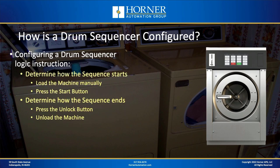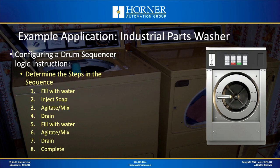Let's look at an example industrial washer — greatly simplified, but illustrative of how to use a drum sequencer. We're going to start it with a start button and end it after the wash sequence is complete by pressing a button that unlocks the washer so we can open the door and unload it. The steps are: fill with water, inject soap, agitate and mix, drain, fill with more water, agitate and mix again, drain again, and then we're done. I know I skipped the spin cycle — again, it's a simplified example.